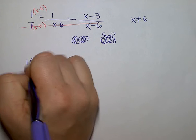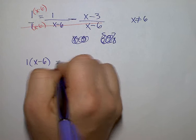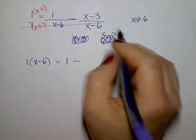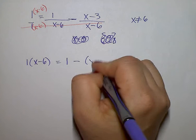On the left hand side I have 1 times the quantity x minus 6, 1 subtracted, and this is where you may have made a mistake, this negative sign is going to be distributed to both things inside.